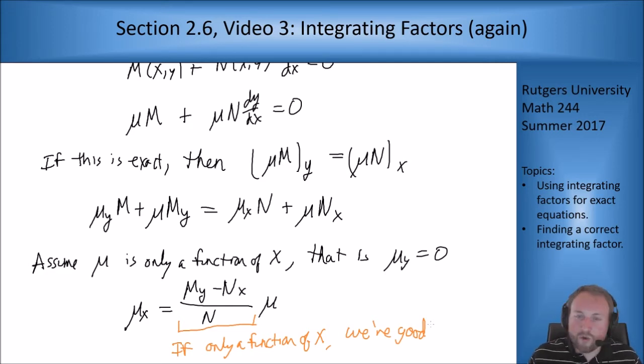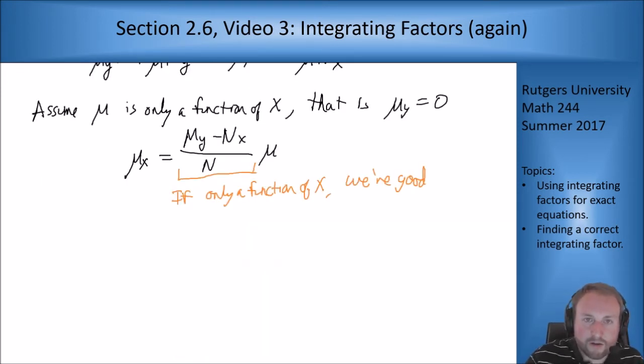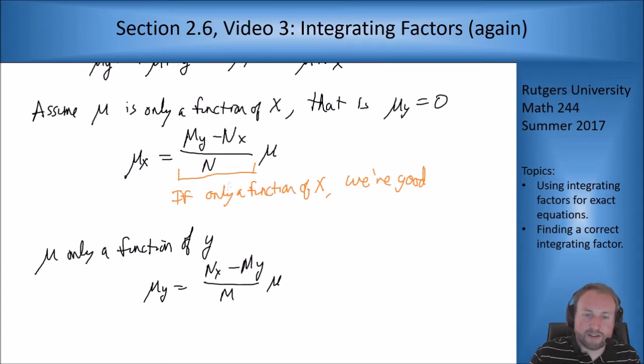We get a similar expression for if μ is just a function of y, where we get that μ only a function of y gives μ_y equals (n_x - m_y)/m times μ. So again, if this guy only depends on y, we're good. If he depends on x as well, then we're out of luck there as well. The idea is that if I can find a function μ that satisfies this, I get my integrating factor, it turns my equation into an exact one, and then I can solve it via the method before.